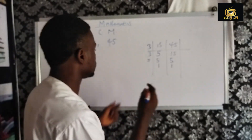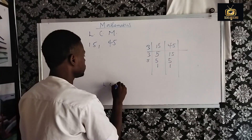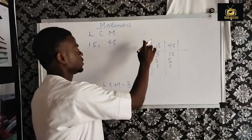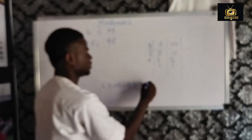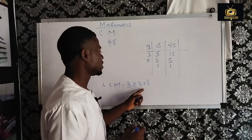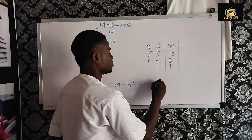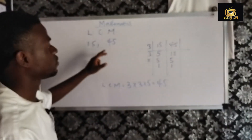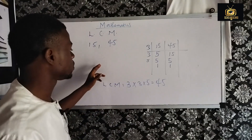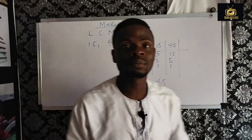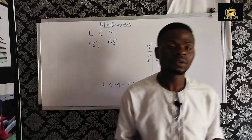Multiply the prime numbers: 3 times 3 times 5. 3 times 3 is 9, and 9 times 5 gives us 45. So the LCM of 15 and 45 is 45.